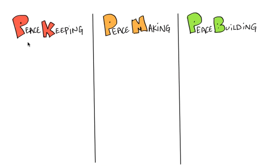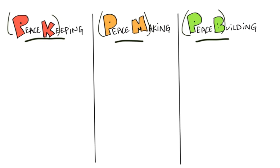We're going to take a look today at the ideas of peacemaking, peacekeeping, and peacebuilding in global politics and what distinguishes them. I've used some color here to try to distinguish between them, and we'll talk about the color coding after. But first let's talk about peacekeeping and what that means in global politics.